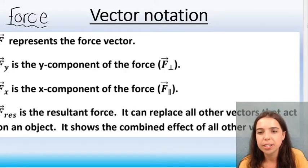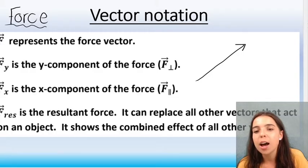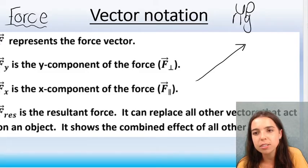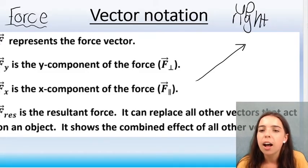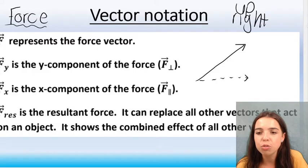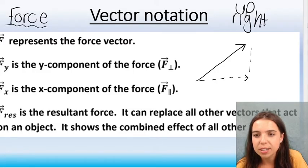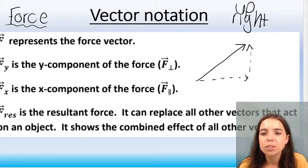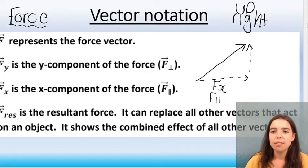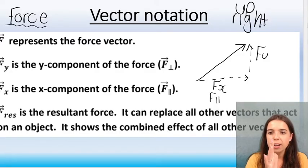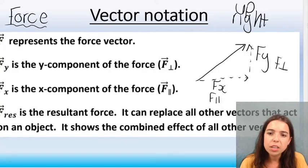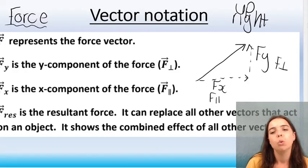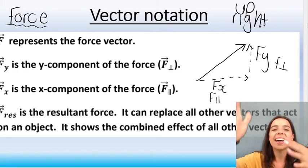But basically, if I have a vector that's going like this, that vector is going up and to the right. Up and to the right. Think about it. It's pointing up and to the right. I can break that up into a vector that's pointing to the right and a vector that's pointing up. That vector that's pointing to the right, I can call fx or f parallel. It's parallel. That vector that's pointing up, I can call fy, like along the y axis, or f perpendicular. This one over here, the solid one, that would be the resultant vector, which is basically fx and fy added together.